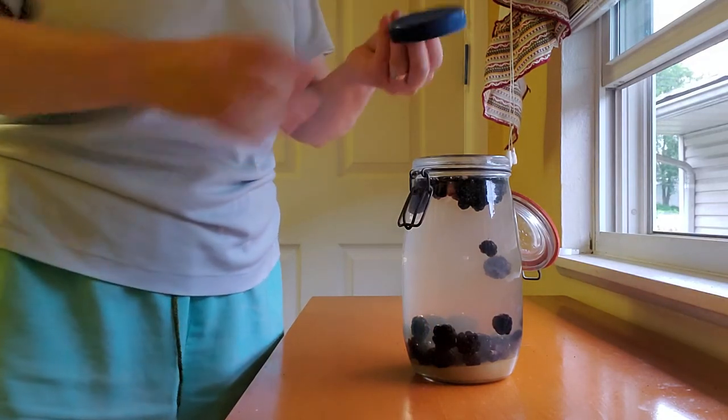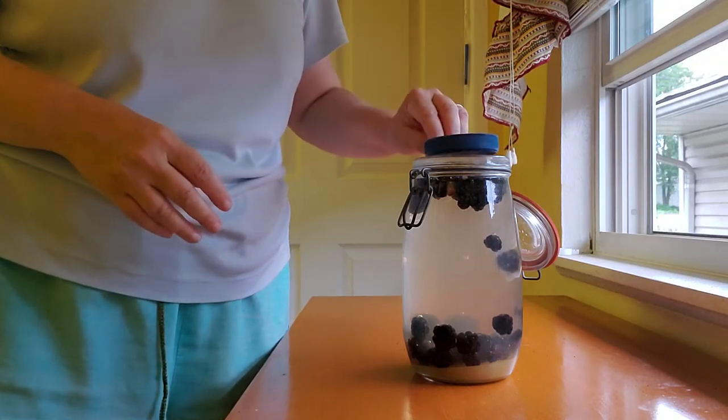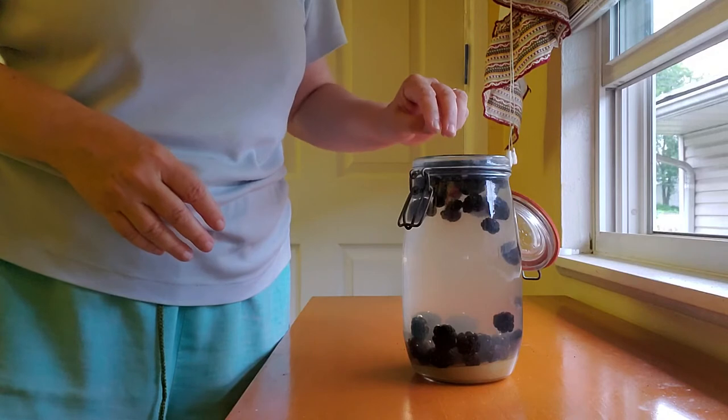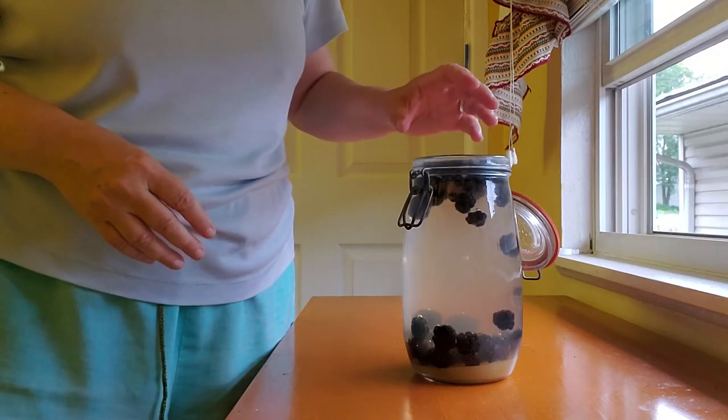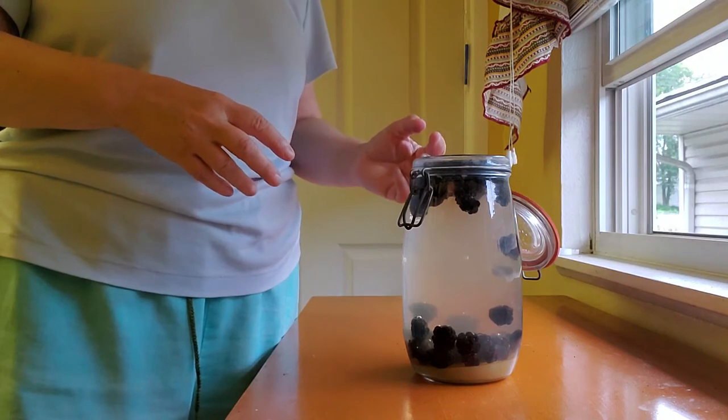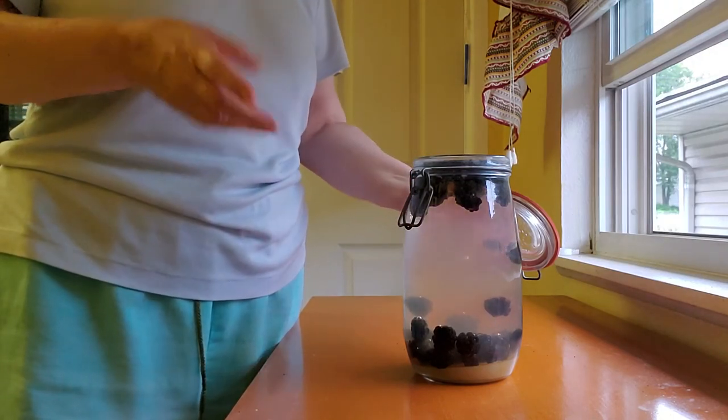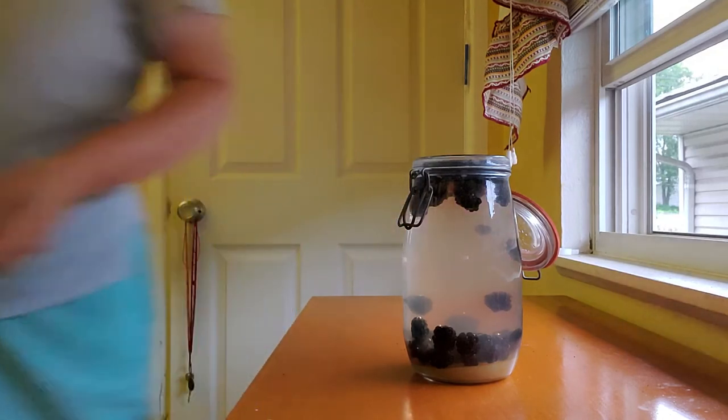And then the last thing I'll do is take this old plastic lid, it's actually from mayonnaise, and I'll put that on top and basically what that does is reduces the surface to air contact so it decreases the amount of mold that might accumulate over the fermentation process.